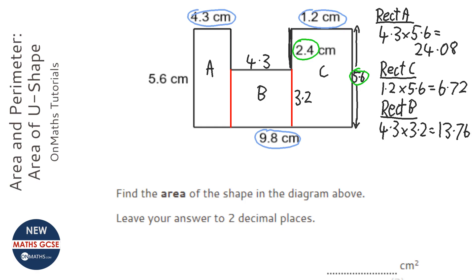Now the total area is just all those added together. So I'm going to do 13.76 plus 6.72 plus 24.08. When I do that I get 44.56. It wants two decimal places, but it already is to two decimal places, so I don't need to do anything.